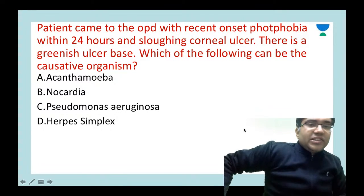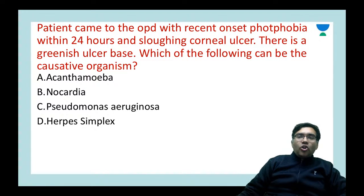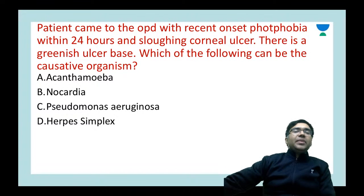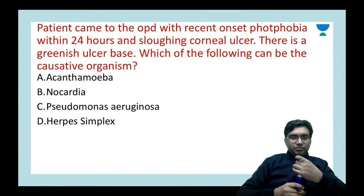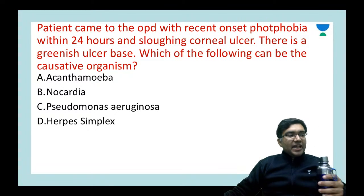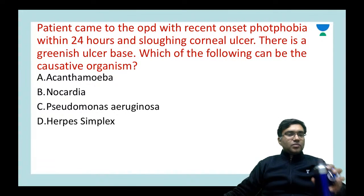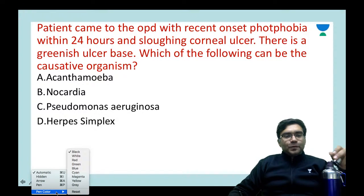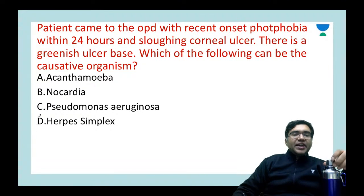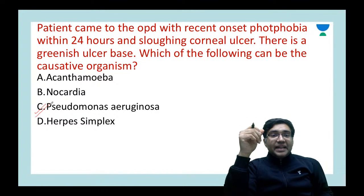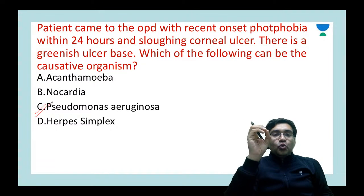A patient came to the OPD with recent onset photophobia within 24 hours and a sloughing corneal ulcer. There is a greenish ulcer base. The two important hints are: sloughing within 24 hours (a very virulent organism) and a greenish ulcer base — both pointing toward Pseudomonas.